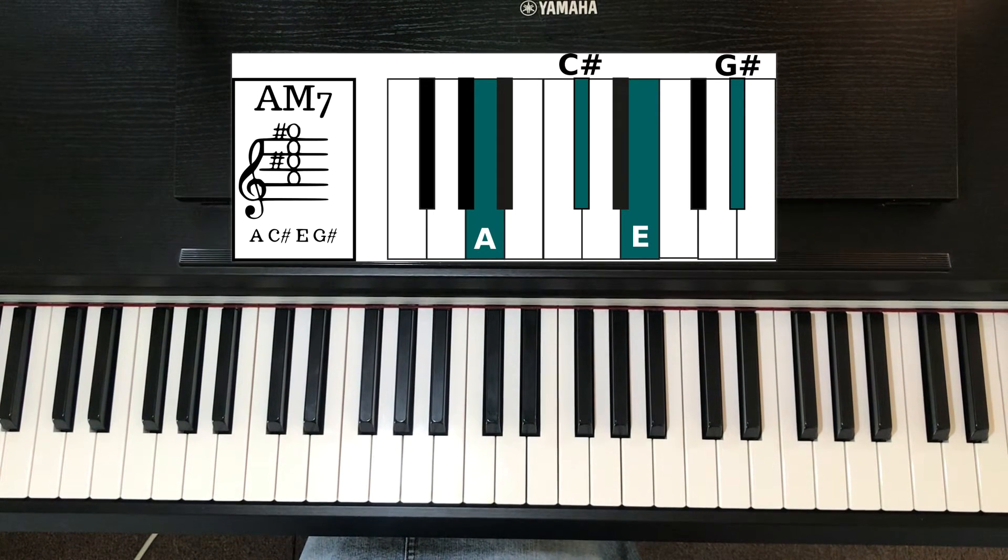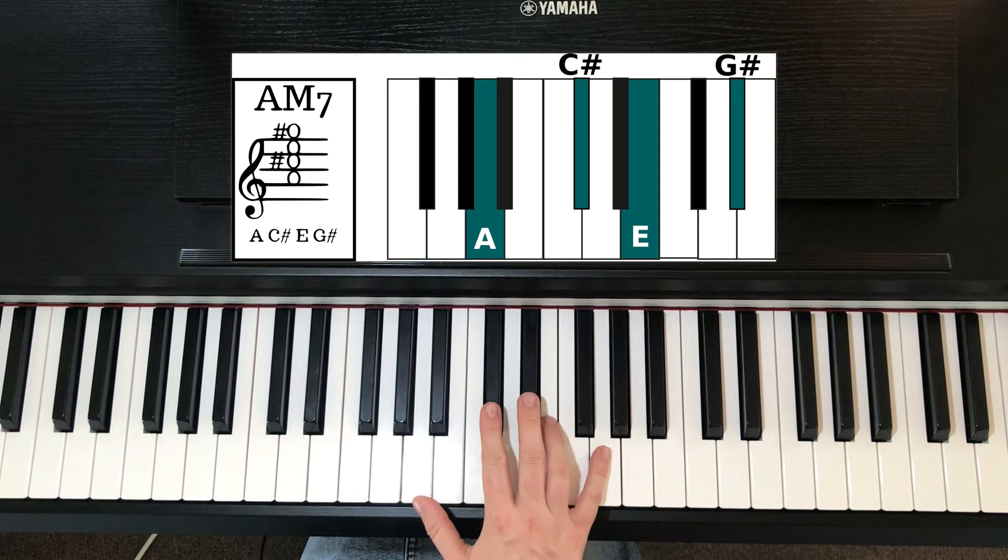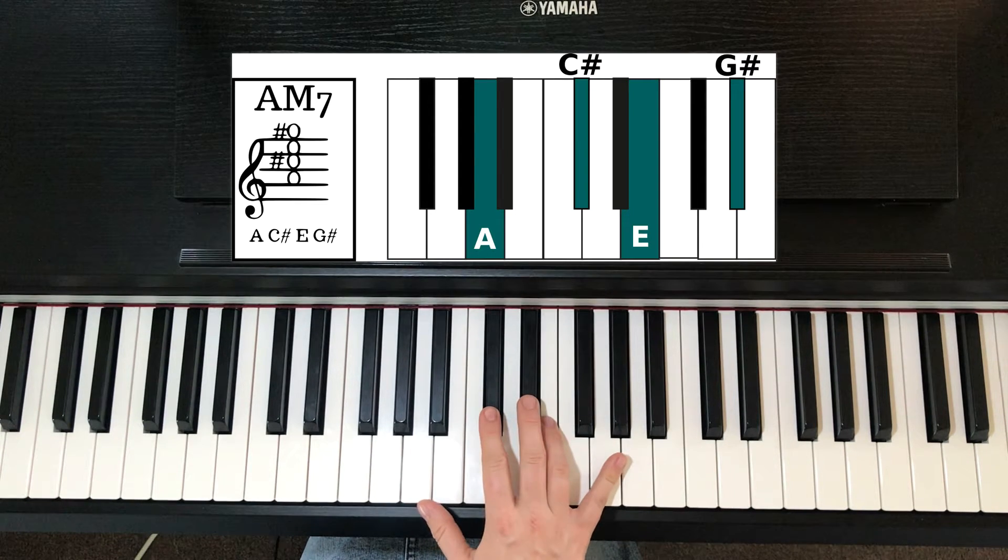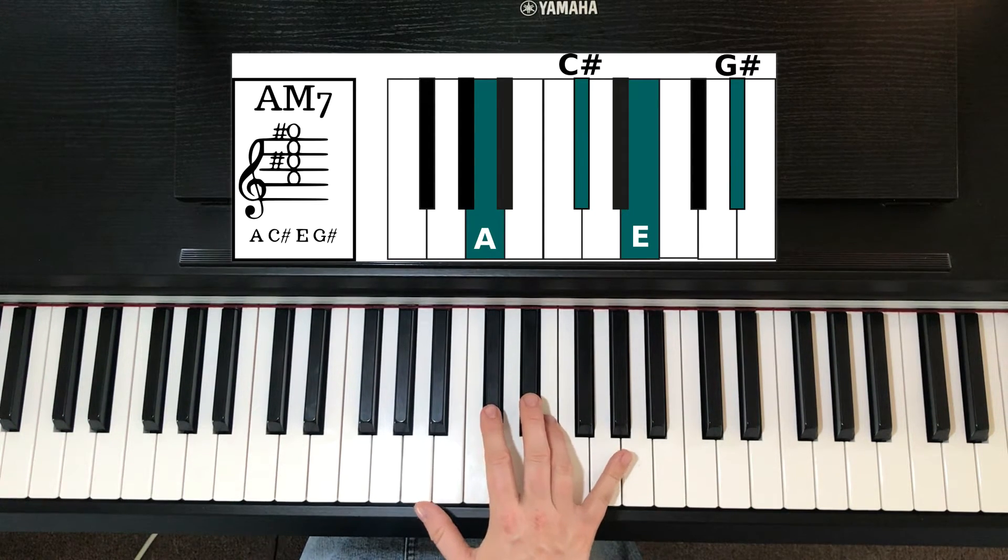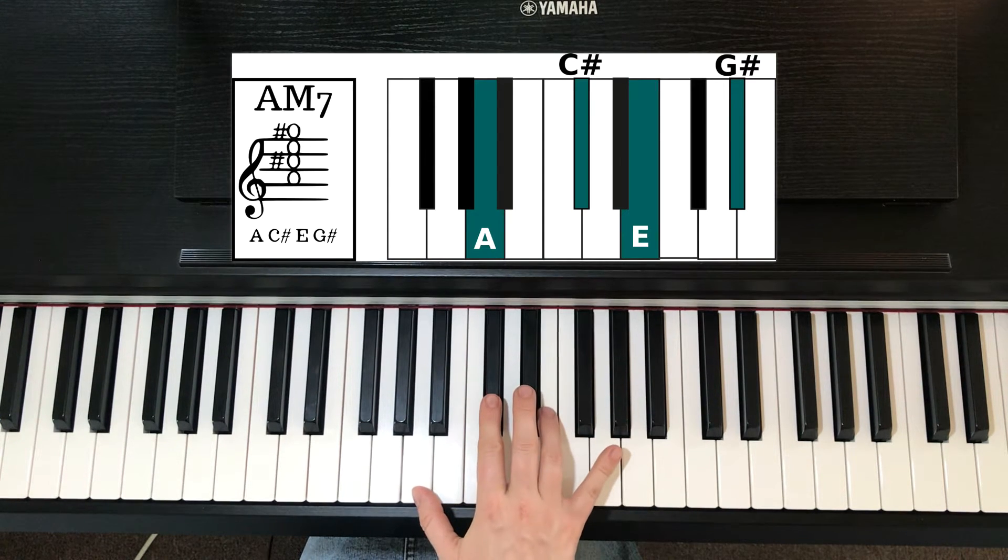Hi, this is April from Piano Lessons Info and this is how you play the A major seven chord. This is written as an A capital M seven, so this one has to be a capital M to be this chord.